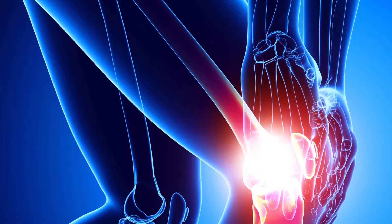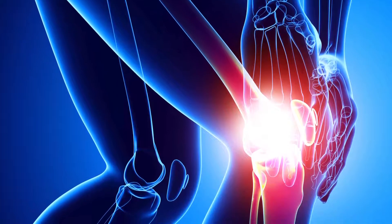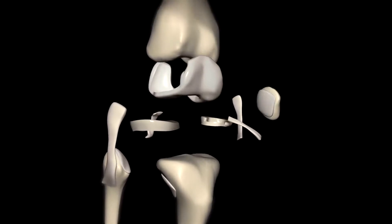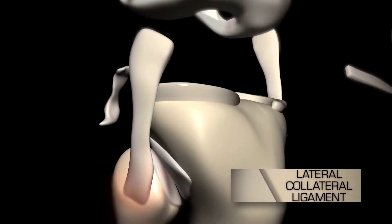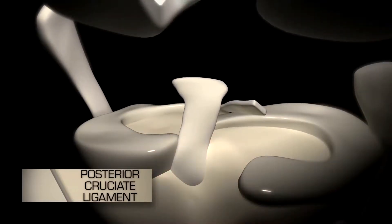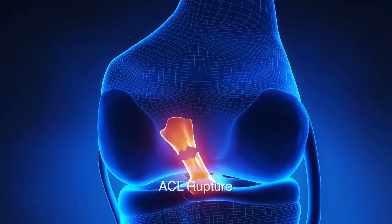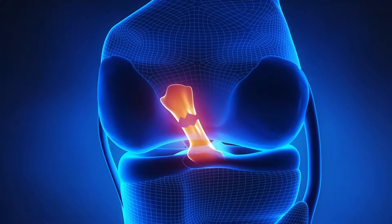Although footballers sustain a lot of cartilage damage, it is injuries to the ligaments of the knee that are the ones we hear about most and are the most serious. There are four ligaments in the knee: two on the outside, the medial collateral and the lateral collateral, and two on the inside, the anterior cruciate and the posterior cruciate. It is damage or rupture to the anterior cruciate ligament, what's called an ACL, that we hear most about and the one suffered by Zlatan Ibrahimović.